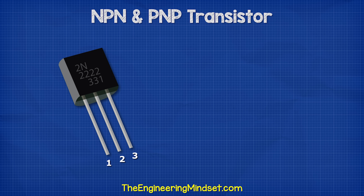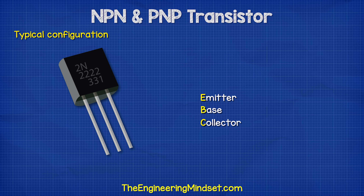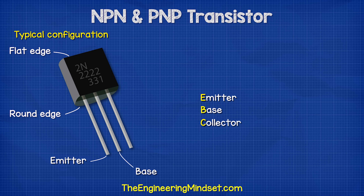With a transistor, we have three pins labeled E, B, and C. This stands for the emitter, the base, and the collector. Typically with these resin body type transistors with a flat edge, the left pin is the emitter, the middle is the base, and the right side is the collector.